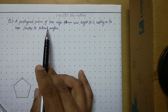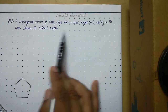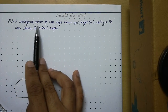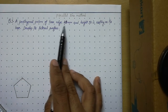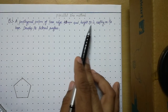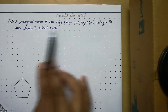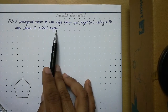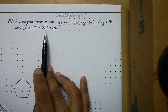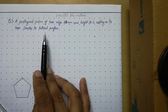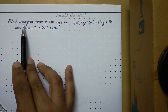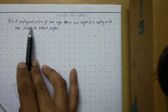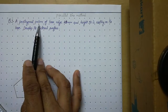Now let us read this question: a pentagonal prism of base edge 20 mm and height 50 mm is resting on its base — develop its lateral surface. The very first step is to draw the front view and top view of the given solid.